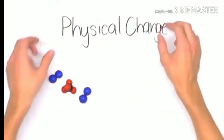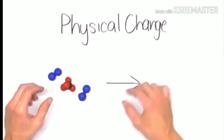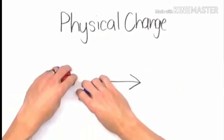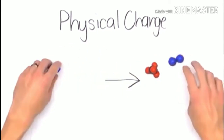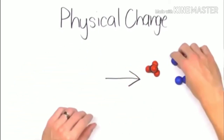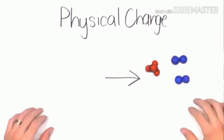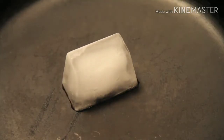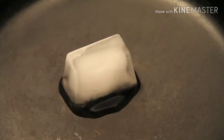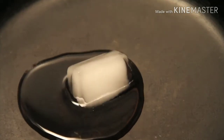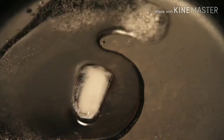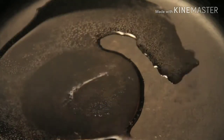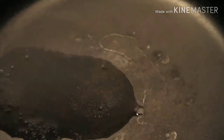When it comes to molecules, one of the two ways that you can change them is with something called a physical change, where you don't change what the molecules are themselves, but you do change their appearance. An example would be this ice cube here melting. It's still water, even as it goes from its solid state into a liquid phase, and if we heat it up, into a gas phase. We didn't change what it was made out of — we just changed the state of matter it's in, and therefore the appearance of the molecules.